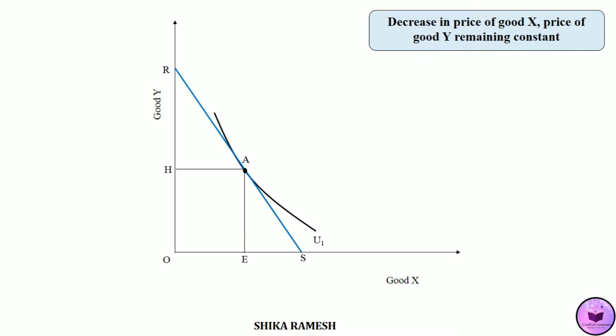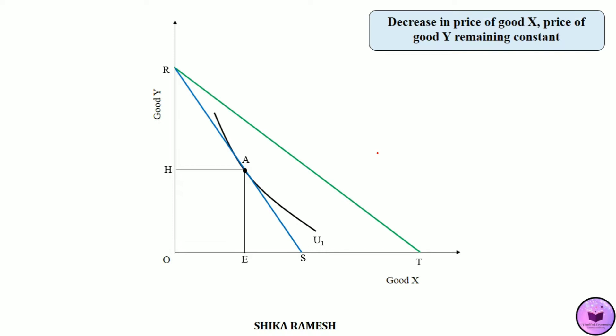The price of good Y remaining constant, when the price of good X decreases, the consumer's real income increases. This increase in real income is shown by an outward shift in the budget line from RS to RT. In this new budget line, the consumer again reaches a new equilibrium at point B at U3 utility level, consuming OG amount of good X and OI amount of good Y. Note that the nominal income is the same in both RS and RT; only the real income has increased.